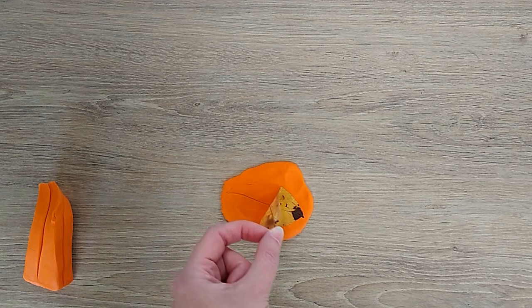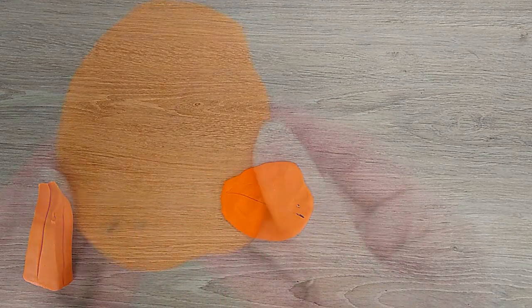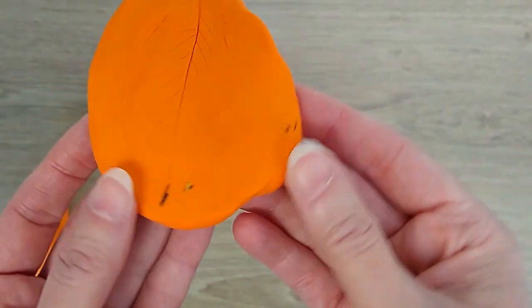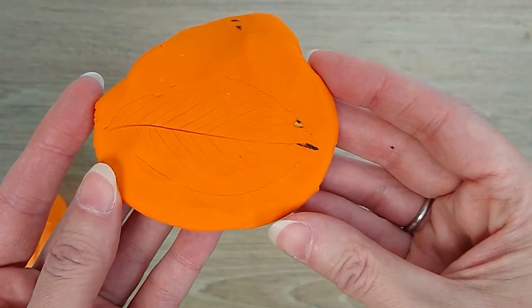Now carefully pull the leaf off. Let's see if it worked. It did! You can see the veins in the leaf and the jagged outline.